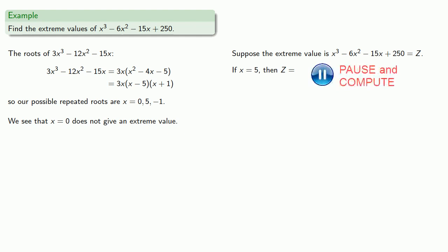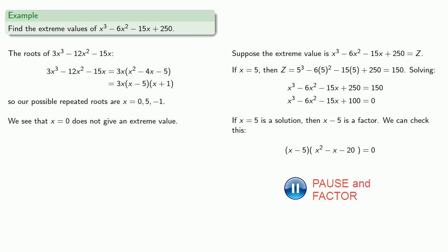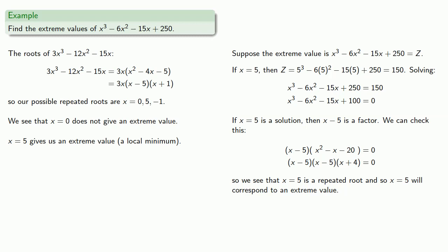If x equals 5, then z is equal to 150. And solving our equation... Now remember we know that x equals 5 is a solution. So x minus 5 is a factor. So our left hand side is x minus 5 times something, which works out to be... And in fact our something factors into... So we see that x equals 5 is a repeated root. And so x equals 5 will correspond to an extreme value. Now by other means we'll find out that this corresponds to a local minimum value.